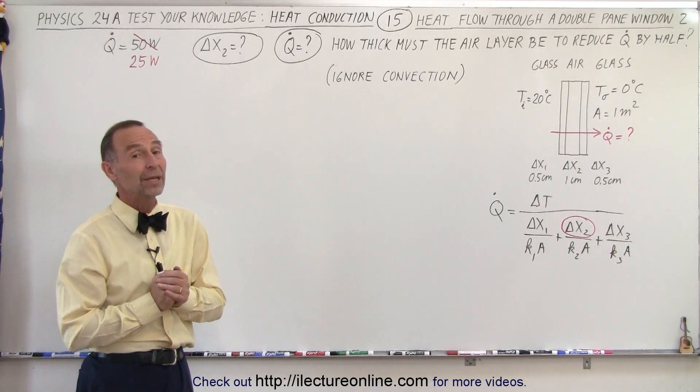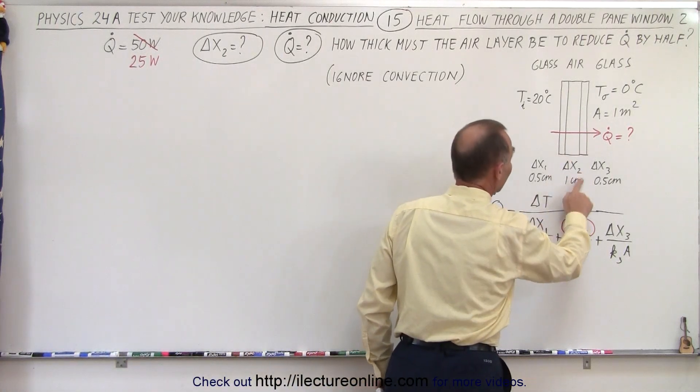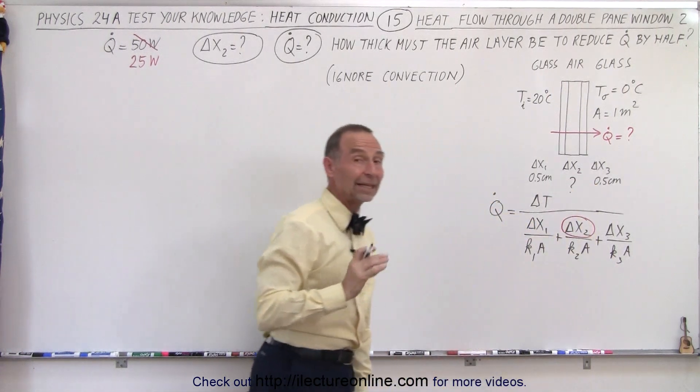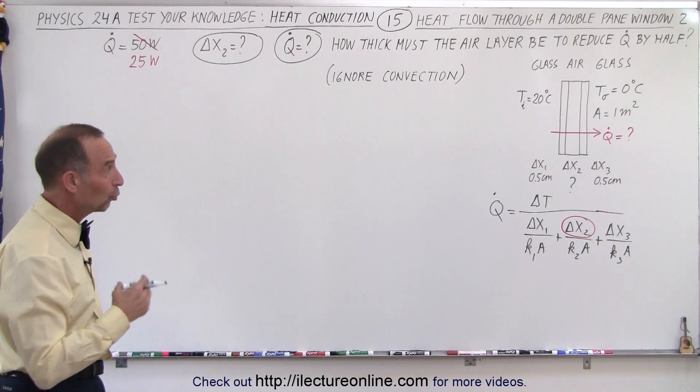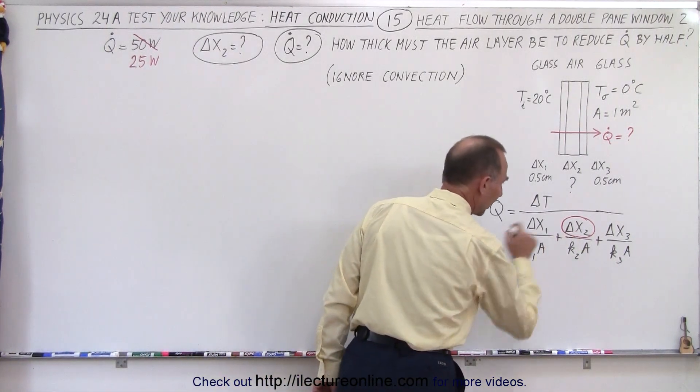So how thick does the layer need to be in order to accomplish that? Remember that in the previous video this was one centimeter, now we're going to try to figure out how thick that layer needs to be in order to bring the heat flow down to half of what it was before, 25 watts, which means we have to solve the equation for delta x2.